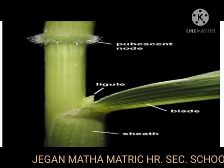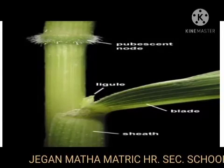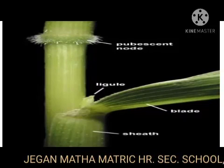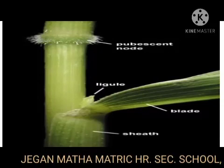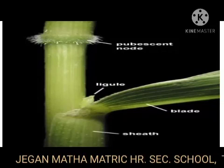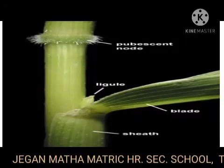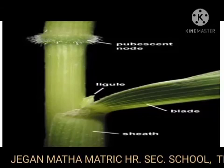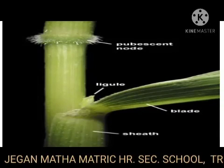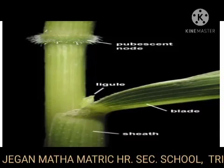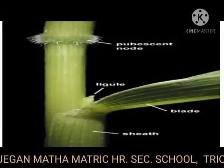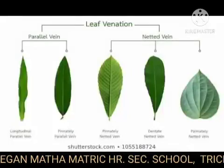Stipules are commonly found in dicotyledons. In some grasses, an additional outgrowth is present between the leaf base and lamina, called the ligule. Sometimes small stipule-like outgrowths are found at the base of the leaflets of a compound leaf; they are called stipels. The main function of stipules is to protect the leaf in the bud condition.